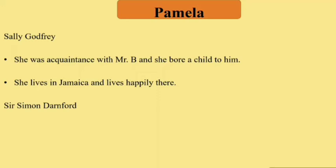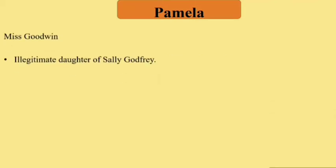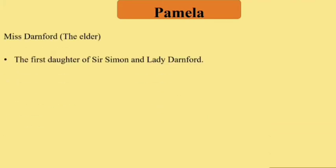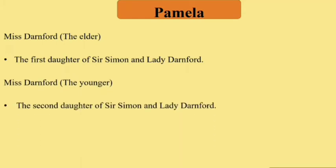Sir Simon Danford is a noble neighbor of Mr. B in Lincolnshire. Mrs. Goodwin, also known as Miss Godwin, is the daughter of Sally Godfrey — who went to Jamaica — and she lives in a boarding school and does not know about her parents. Lady Danford is the wife of Sir Simon Danford. Miss Danford the Elder is the first daughter and Miss Danford the Younger is the second daughter of Sir Simon and Lady Danford.